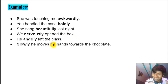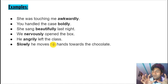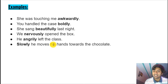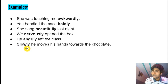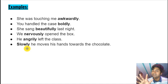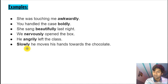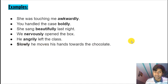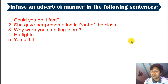An adverb of manner can also come at the beginning of a sentence, but only when you want to focus on the adverb and be quite dramatic about it. It's very less common but you can use it. Example: 'Slowly, he moves his hands towards the chocolate.' Starting with slowly builds suspense — you're keeping everything a secret, being dramatic. It's still describing how the action is done.